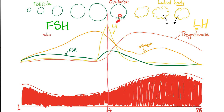The ovum leaves the ovary and goes to the fallopian tube, waiting for sperm to fertilize it — hashtag fertilization — producing a zygote. Back in the ovary, after the follicle loses its ovum through ovulation, the rest of the follicle becomes the luteal body, because it looks yellow ('luteal' means yellow). The luteal body secretes progesterone. So in the first half you only had estrogen, but in the second half you have progesterone predominantly, with some estrogen.